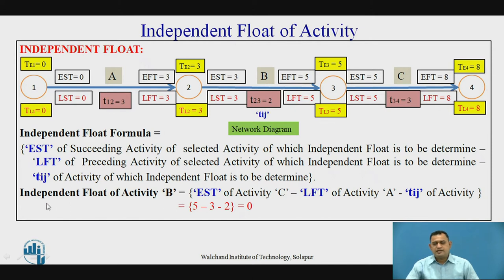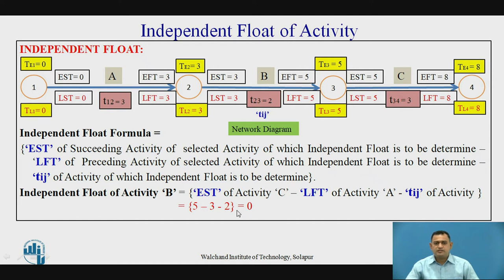Let's see the example for independent float of activity B. The succeeding activity is C, and EST of activity C is 5. The preceding activity of B is A, and LFT of activity A is 3. The activity duration of B is 2. So independent float = 5 minus 3 minus 2, which equals 0. In this way we can determine the independent float for activity C and activity A as well.